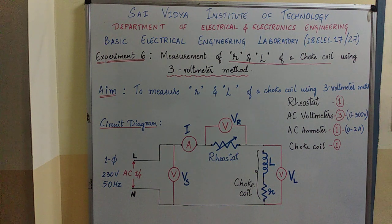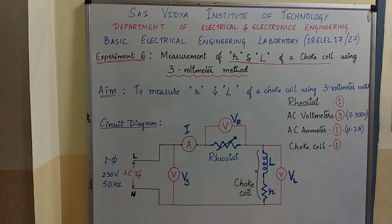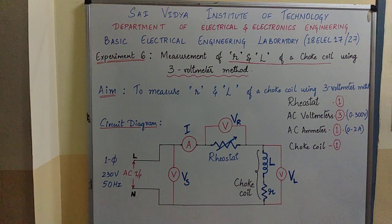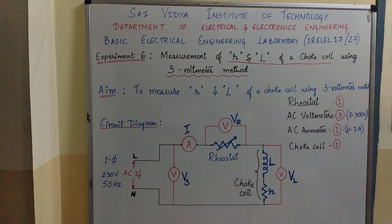These methods are also used to measure the quality factor and power absorbed by the given choke coil. The lower the value of the resistance r, the better is the quality of the coil. By conducting this experiment, we will know how to calculate the resistance and inductance of a choke coil by measuring voltages across the source, rheostat, and the choke coil — hence this is the 3 voltmeter method.